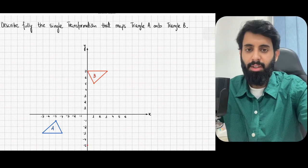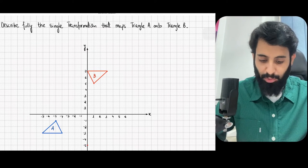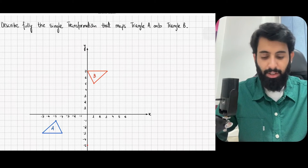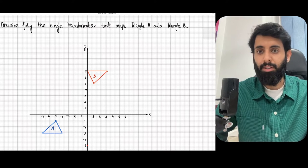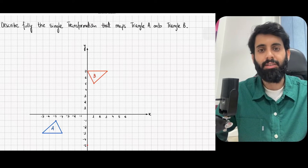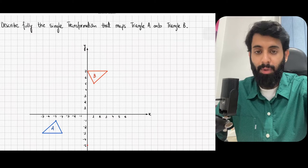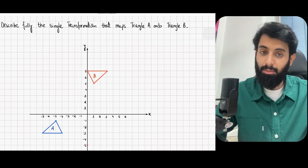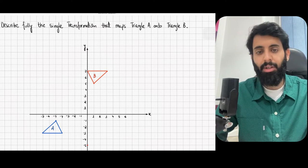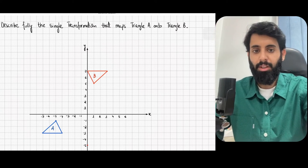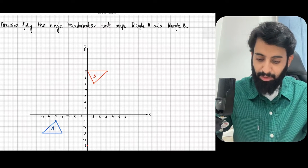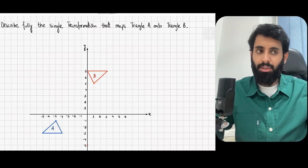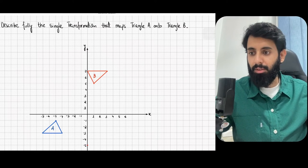Hello everyone, hope you guys are doing well. In today's video I'm going to be showing you how you can find the center of rotation without the help of a ruler and compass. One way to find the center of rotation is with the help of a ruler and compass — that's how we draw a perpendicular bisector — but the problem with that method is that the answer is not always accurate.